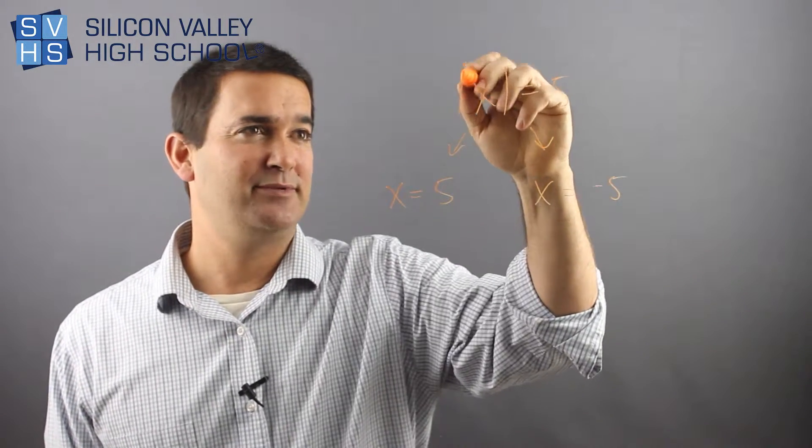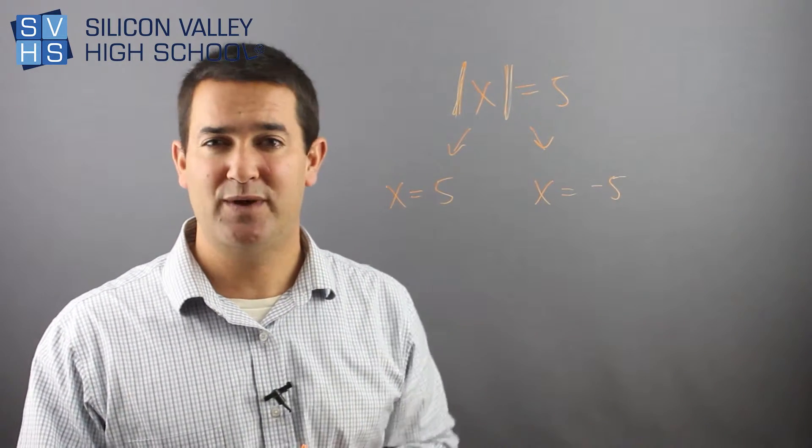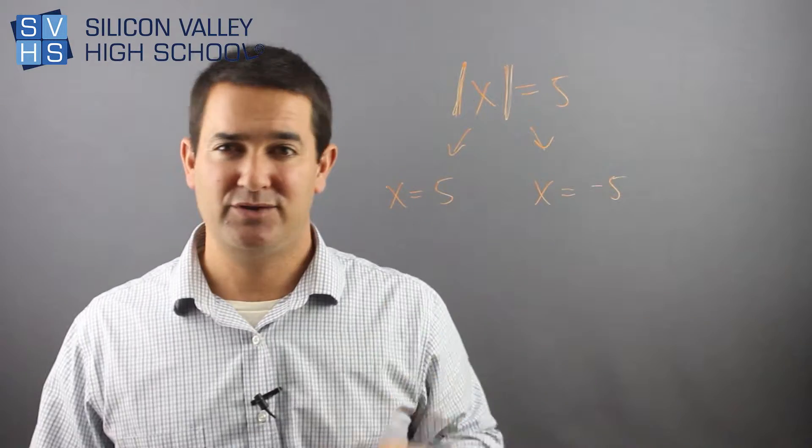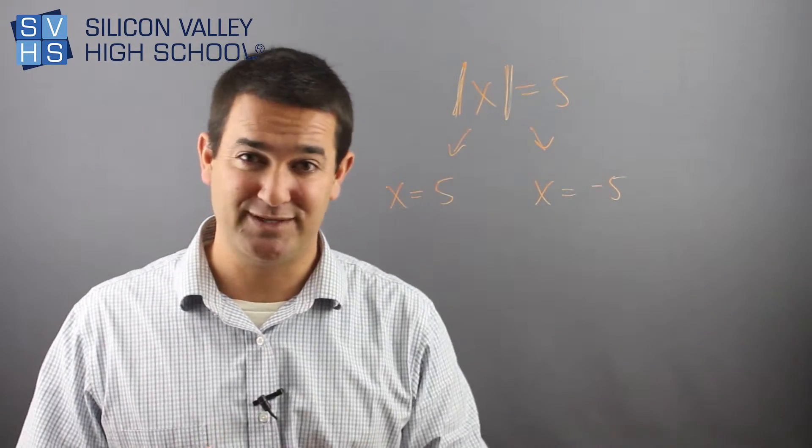So whenever you see this absolute value sign of these bars, you're going to end up with two scenarios, two equations that are separate. You solve them independently, and that's the answer. So again, too easy. It's almost confusing that was so easy.